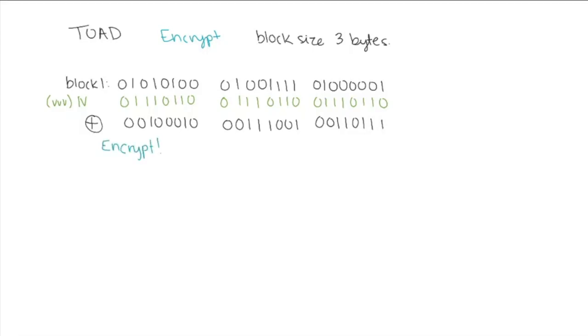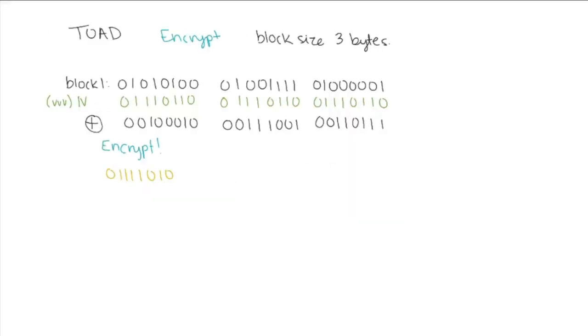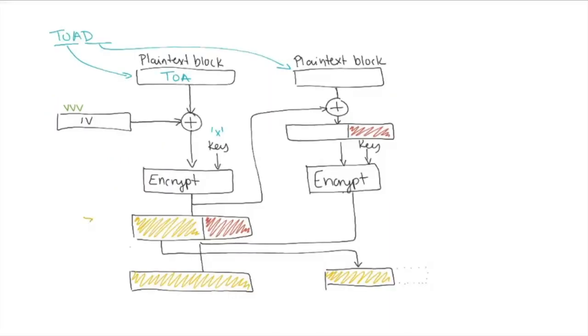We're now going to encrypt and just like the last video we're going to use the same key, key X, and we're following the same encryption function to get the following. This gives us Z semicolon period just like the last one.